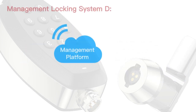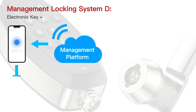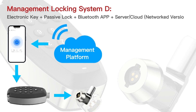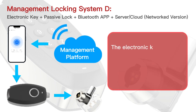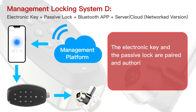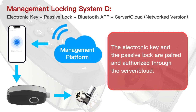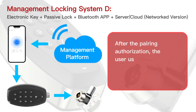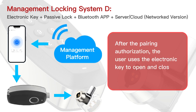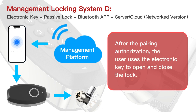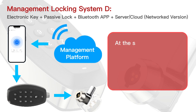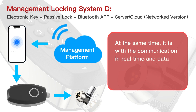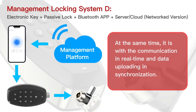Management locking system D: electronic key plus passive lock plus Bluetooth app plus server cloud, networked version. The electronic key and the passive lock are paired and authorized through the server cloud. After pairing authorization, the user uses the electronic key to open and close the lock, with real-time communication and synchronized data uploading.